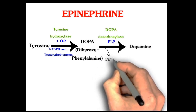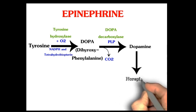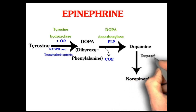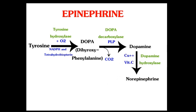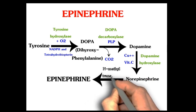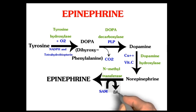One atom of CO2 will be liberated. Dopamine is then converted into norepinephrine by the enzyme dopamine hydroxylase, which is dependent on copper and vitamin C. Then norepinephrine will be converted into epinephrine by the enzyme N-methyltransferase, using the active form of methionine, S-adenosyl methionine, which is converted into S-adenosyl homocysteine.